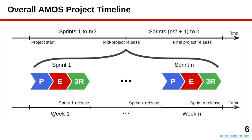Here you can see the overall timeline of an AMOS project. An AMOS project, like any Scrum project, is split into multiple sprints — a whole stream of so-called sprints. A sprint is a time box with a defined duration. That duration in AMOS is one week. Your work is split into one-week increments. Every week you will go through the basic Scrum cycle of planning your work, doing your work, reviewing and releasing, and doing a retrospective for process improvement before starting the next sprint.